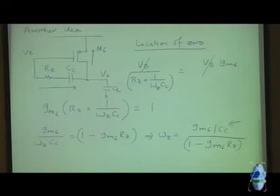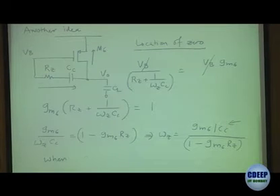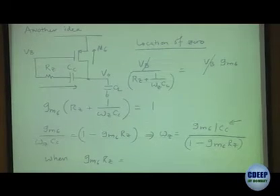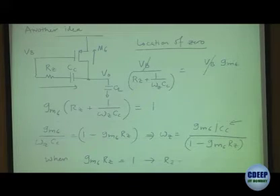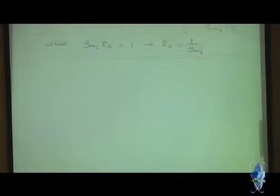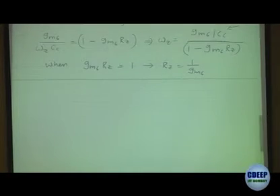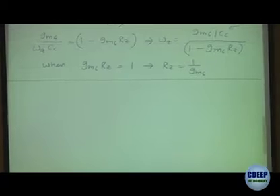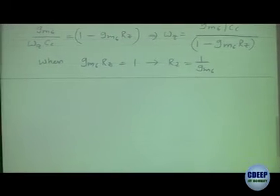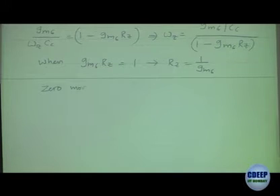When GM6*Rz equals 1 — meaning Rz = 1/GM6 — omega_Z becomes infinity. Just by adding a resistor, the zero moves to infinity.